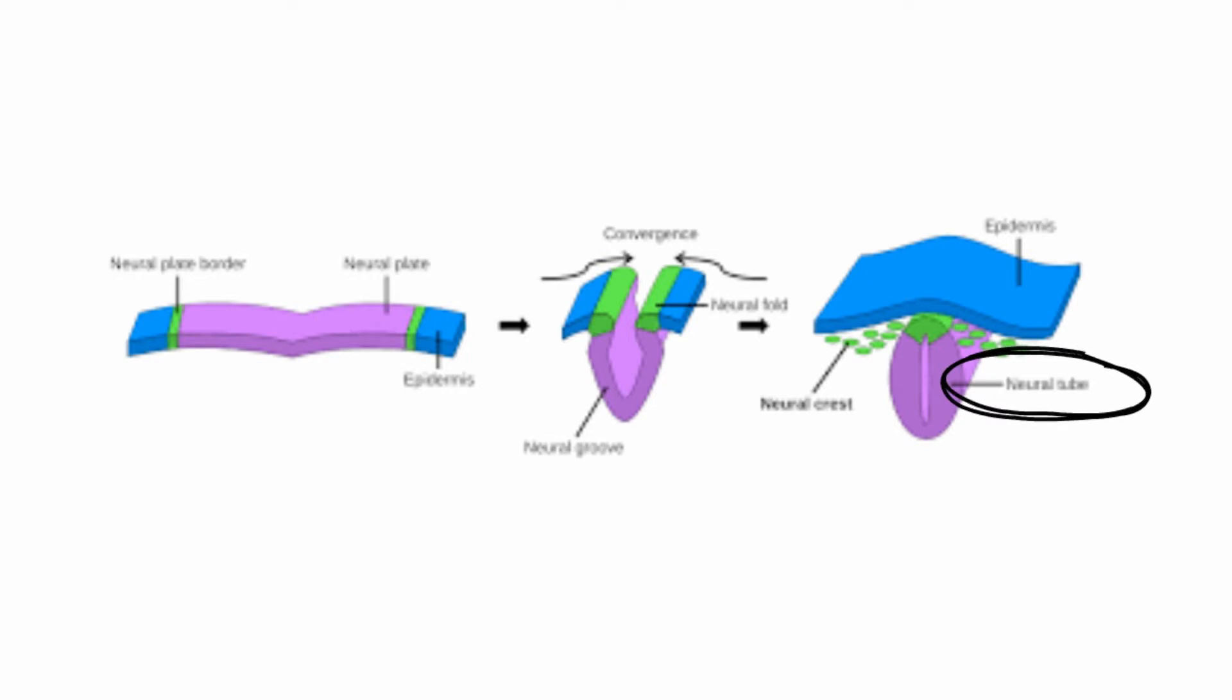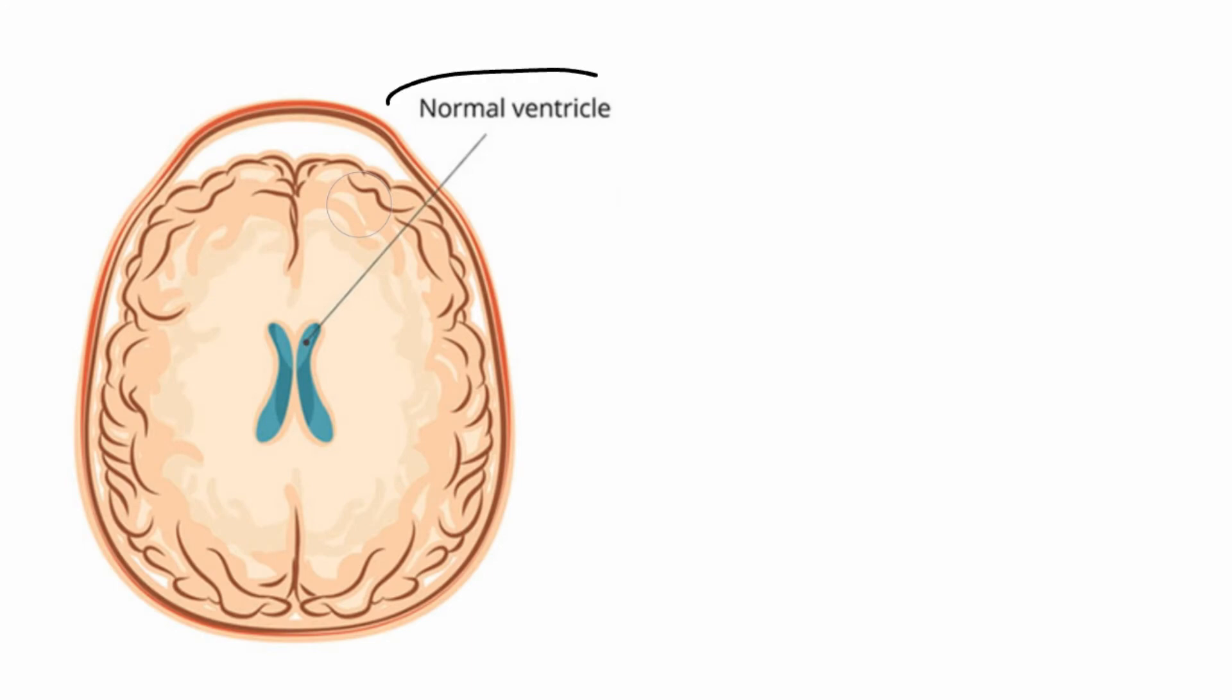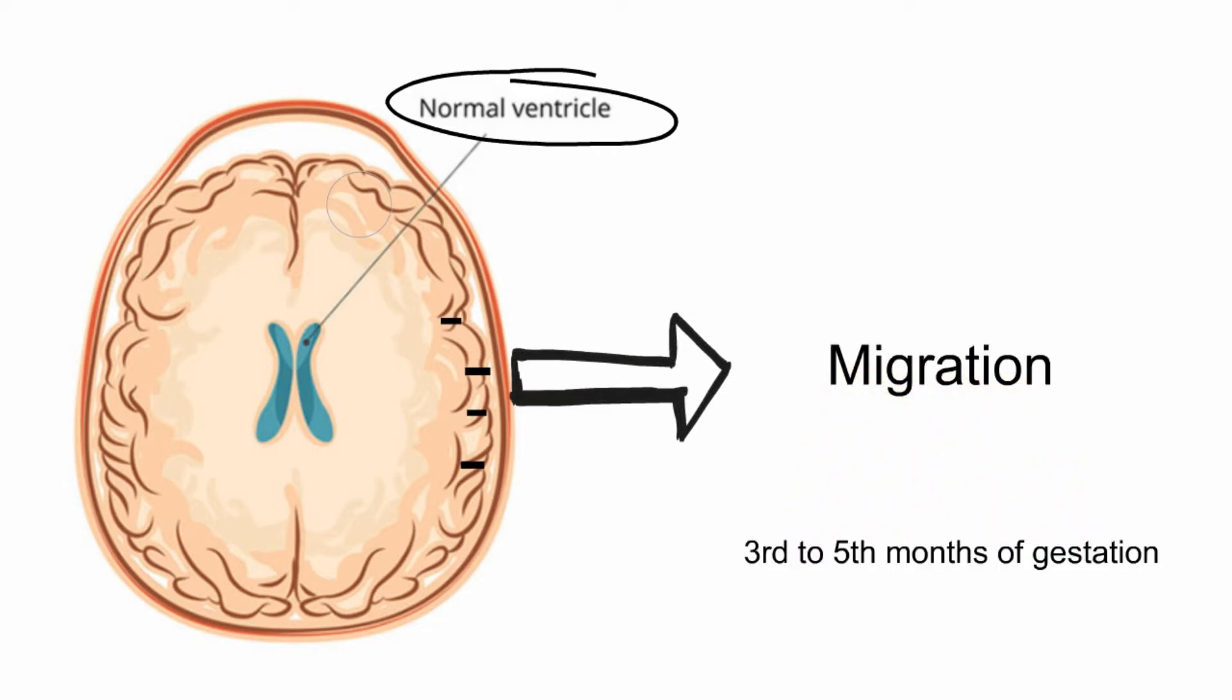Following this stage, the neurons start to form from the ventricular and subventricular zones and then begin to migrate to their final sites within the cerebral cortex. This stage occurs during the third through fifth months of gestation.